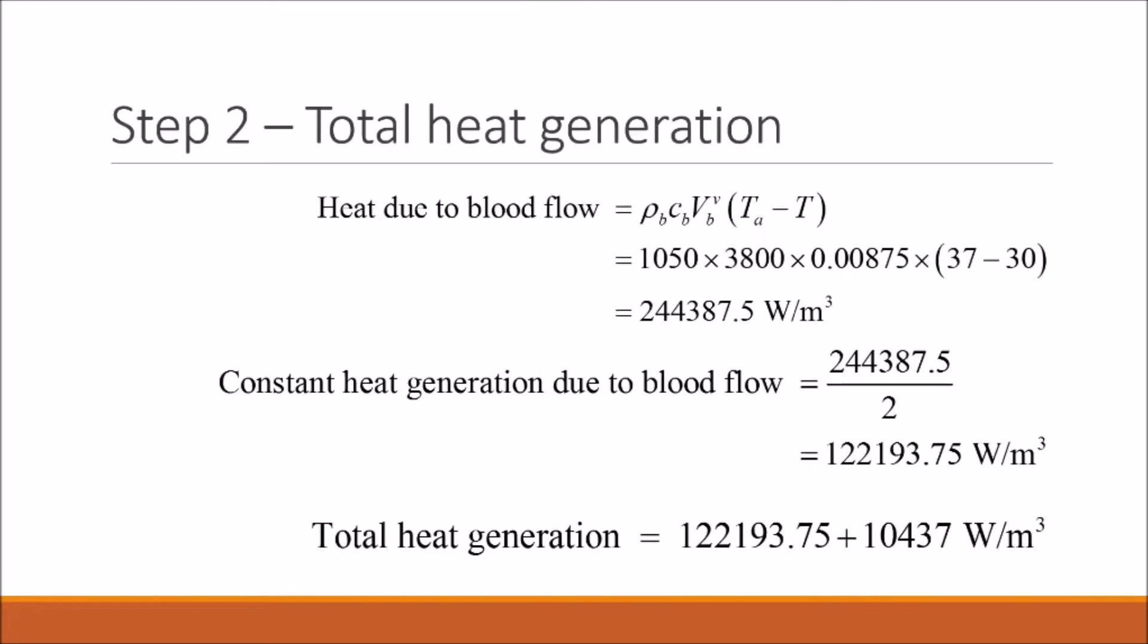Now we need to find the total heat generation, or our Q term that we will be plugging into our general equation. So we've already found our heat due to blood flow, but the problem tells us to consider heat generation due to blood flow as only half of this value.